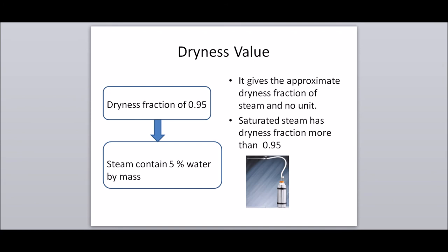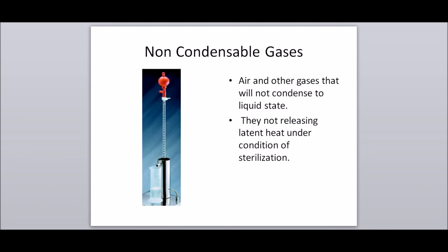Dryness value: it gives the approximate dryness fraction of steam, with no unit. Saturated steam has a dryness fraction greater than 0.95. If we consider a dryness fraction of 0.95, it means the steam contains 5% water by mass. Non-condensable gases: air and other gases that will not condense to a liquid state. They do not release latent heat under sterilization conditions.